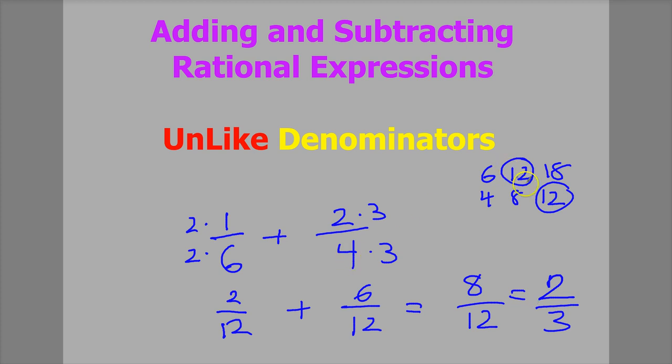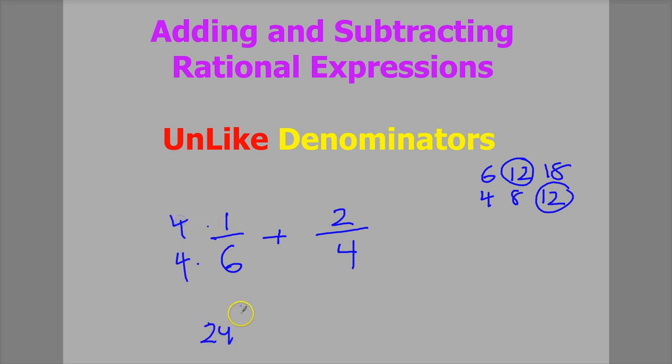Another thing that you could have done instead of making a multiples list is just multiply 6 times 4 to get 24, and then 4 by 6 to get 24. Sometimes it's easier, as opposed to coming up with some multiples list, simply to use a process where you multiply one by the other, because that certainly will give you a common denominator. So 6 times 4 gives you 24, and 4 times 6 gives you 24 as well. This is much more likely what you'll end up doing when you get to rational expressions. So that's it for basic adding and subtracting fractions with unlike denominators.